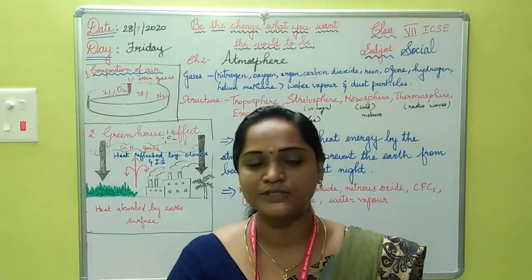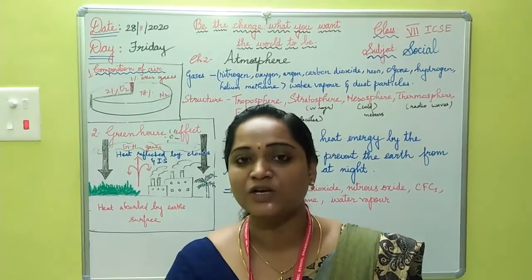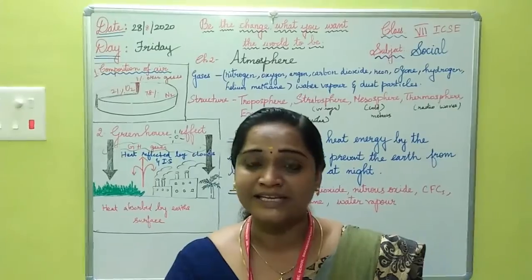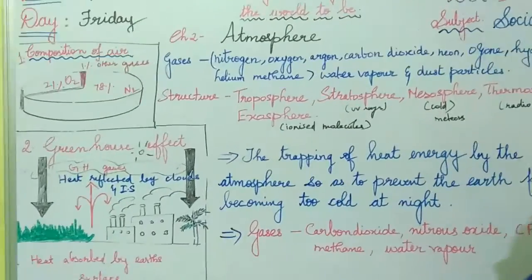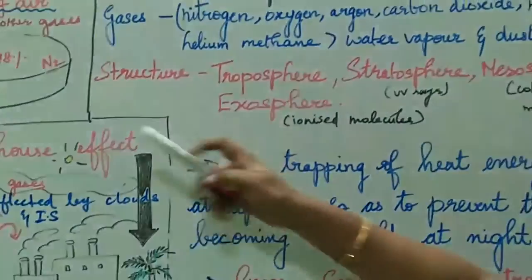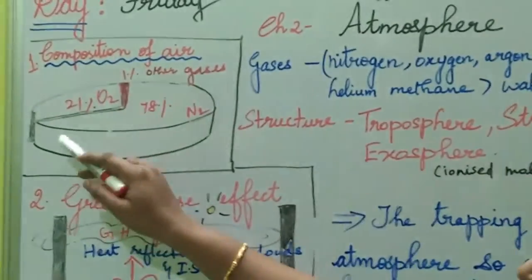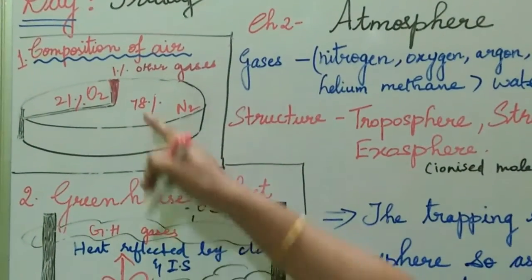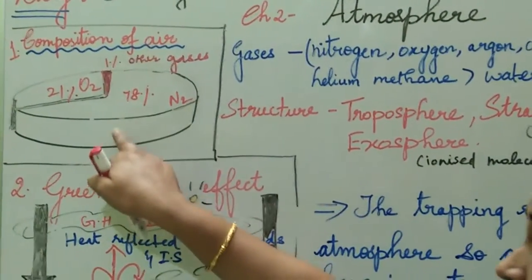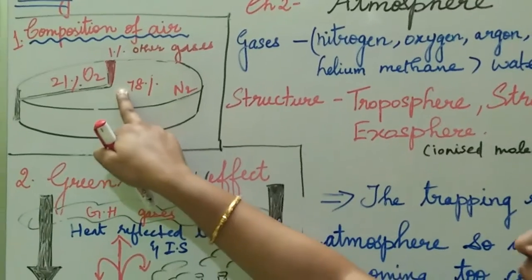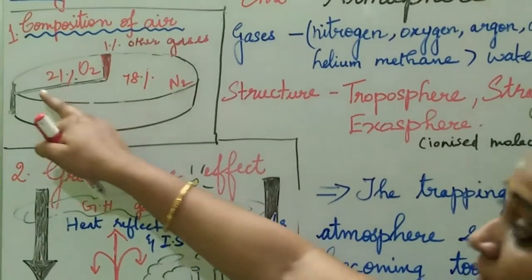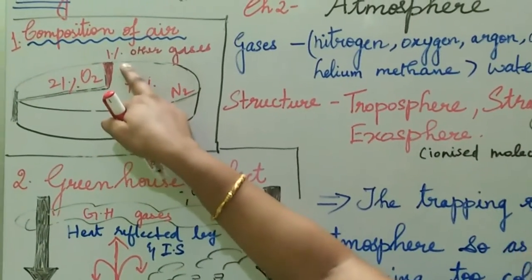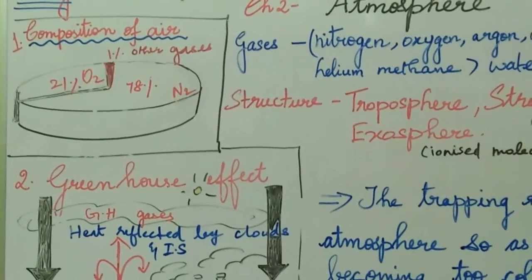In this lesson we are first going to discuss about the composition of air and then about the greenhouse gases. About 78% of air is nitrogen, 21% is oxygen, and the remaining 1% is other gases.